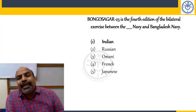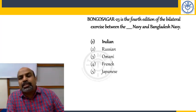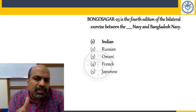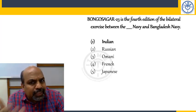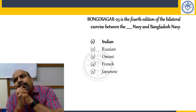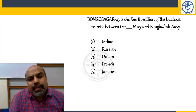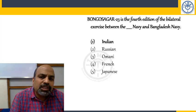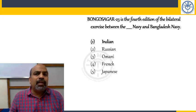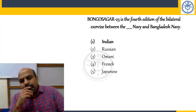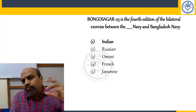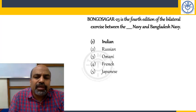Bonga Saga is the fourth edition of the bilateral exercise between the Indian Navy and the Bangladesh Navy. India has several naval exercises with other countries: with Russia it is Indra, with Oman it is Naseem Al-Bahar, with France it is Varuna, and with Japan it is JIMEX — Japan-India Maritime Exercises.